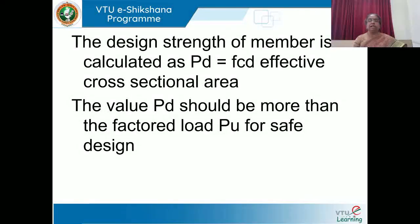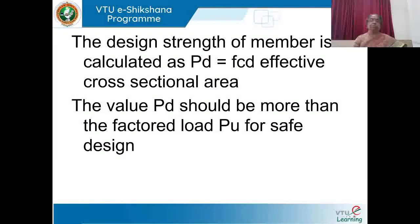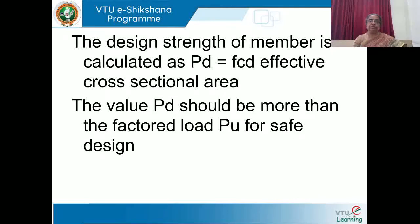Assumptions in design of compression members: The column is assumed to be absolutely straight. The modulus of elasticity is assumed constant throughout the built-up column (same material used). Secondary stresses are neglected. The design strength is PD = FCD × effective cross-sectional area, and PD should be greater than the factored load PU (= 1.5 × safe load). In the next class, problems will be solved: type 1 — given a member, find compressive strength; type 2 — given load, choose a member; type 3 — provide lacings and battens with bolted and welded connections.